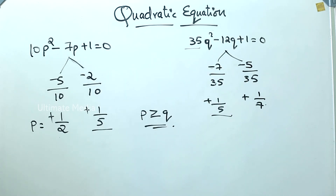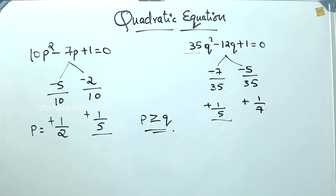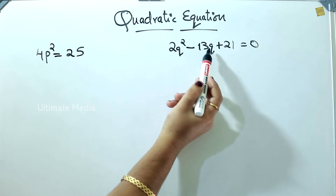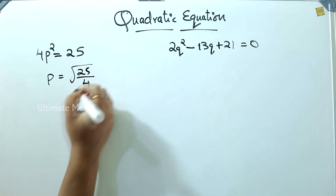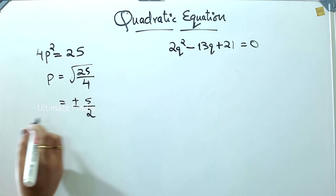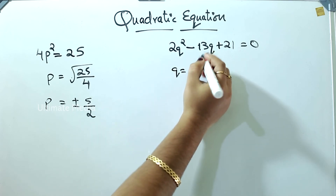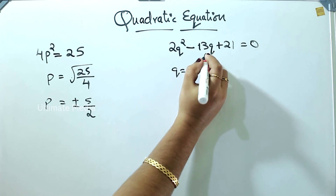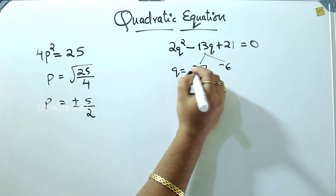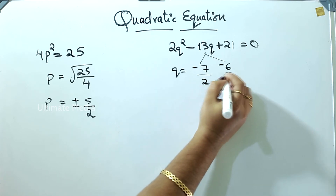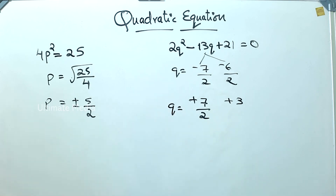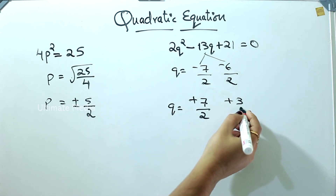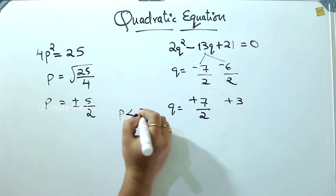I will add a quadratic equation. 1 by 5 is equal to 0. P is equal to root of 25 by 4 — that is, plus or minus 5 by 2. Q is equal to minus 13. It is minus 13, it is minus 7. 7 is equal to 6, it is minus 6, minus 7. By 2, 7 by 2, plus 7 by 2, plus 3. Q is equal to — here is 5 by 2, here is 7 by 2, here is 3. Then P is less than Q.